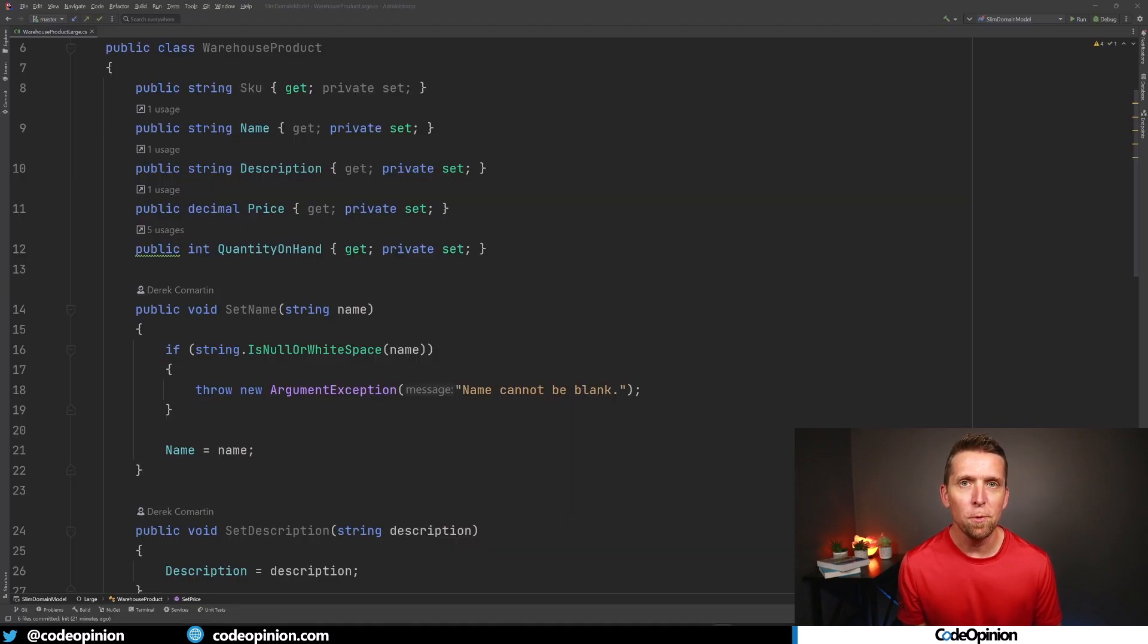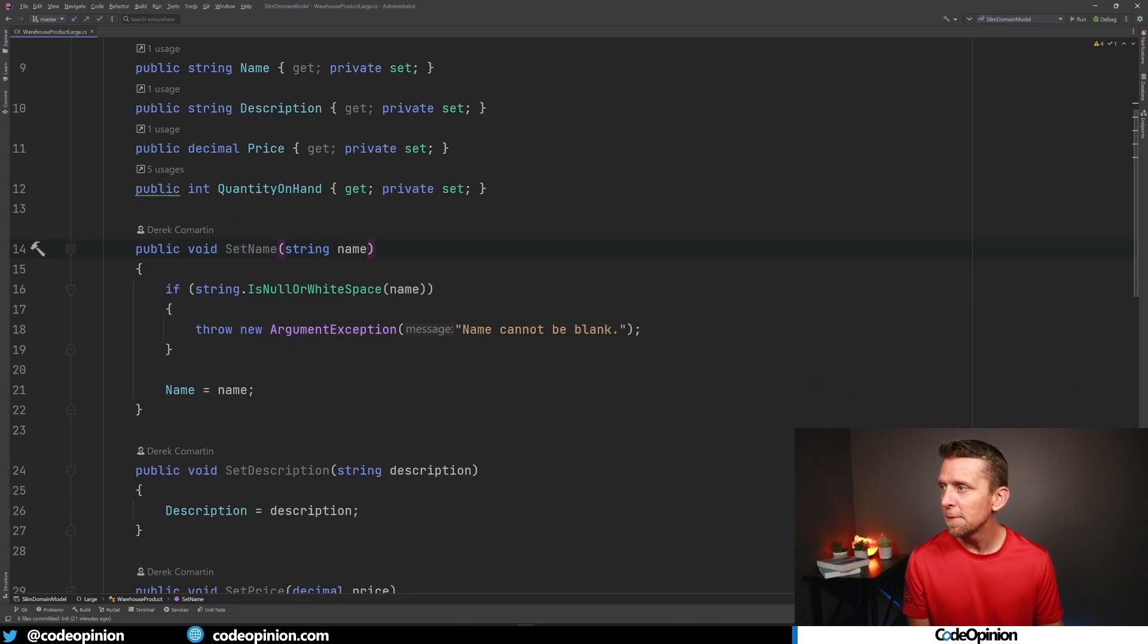So here's a really trivial example that's kind of typical. I have this warehouse product and let's say we're using an ORM. So we have this product which has a SKU which would probably be the identifier. We have things like the product name, the description, the price, and the quantity on hand. You can imagine in the real world this might be a lot larger and the number of properties you're mapping to your underlying storage and database. Then I have methods because these are all private sets and these public methods to set these properties and it's all pretty trivial.